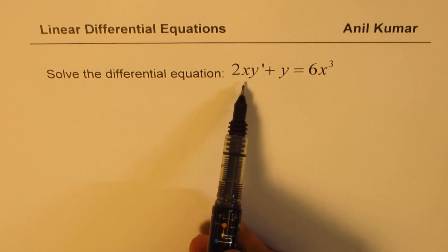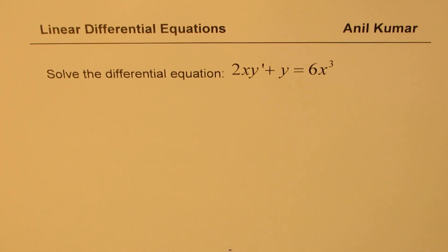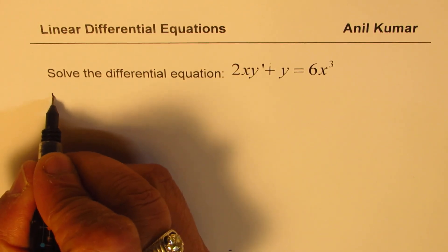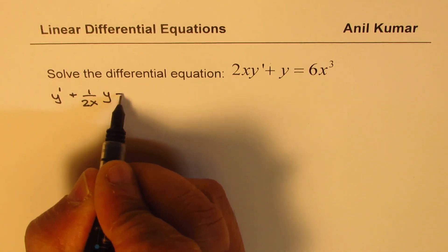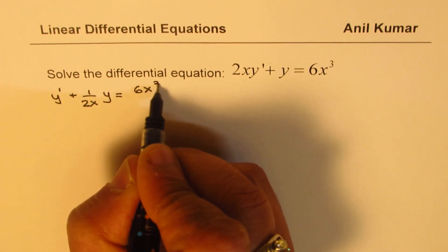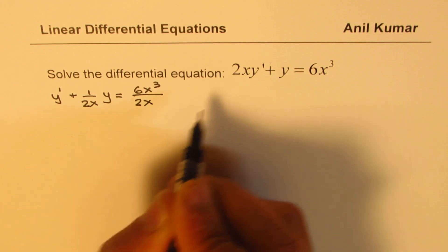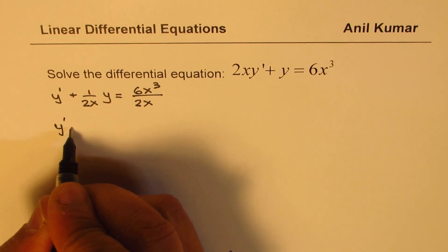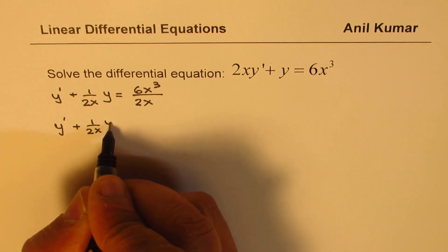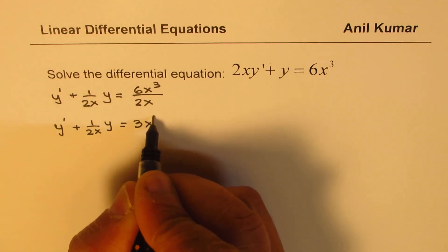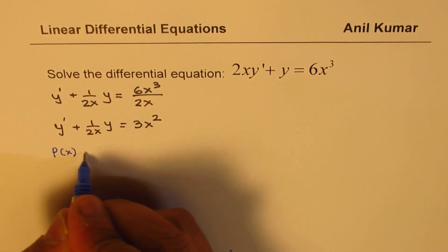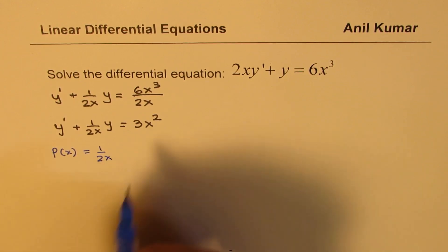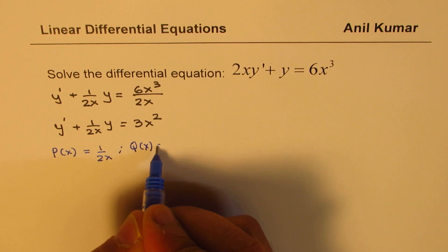Now let's solve 2xy prime plus y equals 6x cubed. We rewrite it in standard form by dividing all terms by 2x: y prime plus 1/(2x) times y equals 3x squared. From this, p(x) equals 1/(2x) and q(x) equals 3x squared.